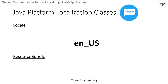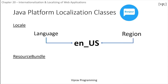A locale is a representation of a specific geographical, cultural, or political region and its language. Locales are represented in a string format with a two-letter abbreviation for the language, an underscore, and then another abbreviation for the region. There is also the resource bundle, which is locale data stored through key-value pairs, and it can be backed using a text file or a class.